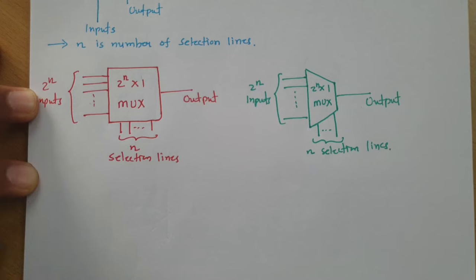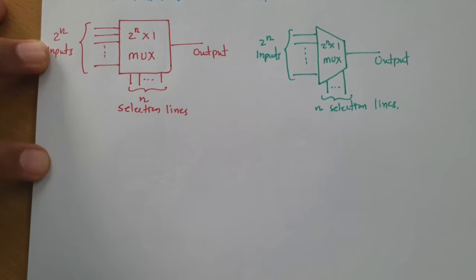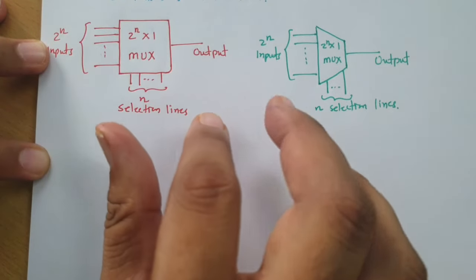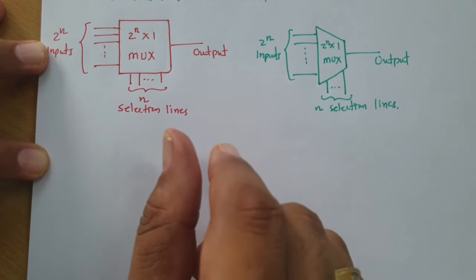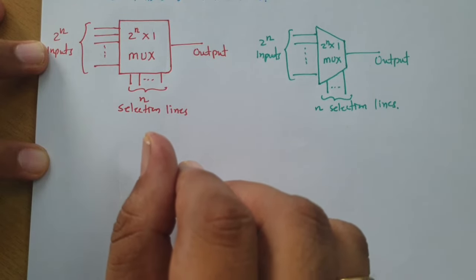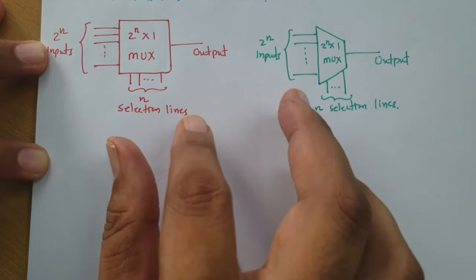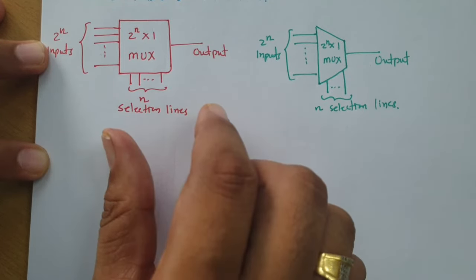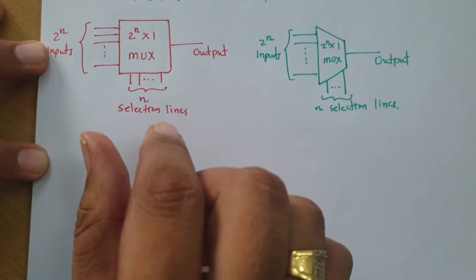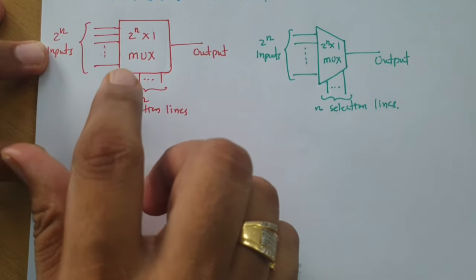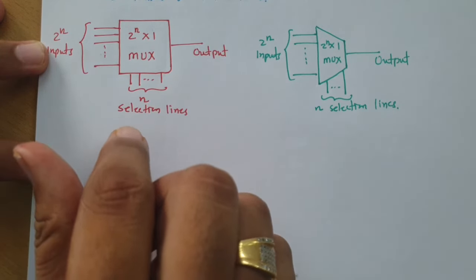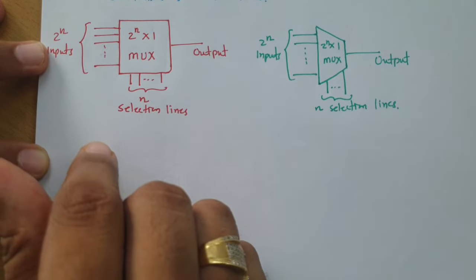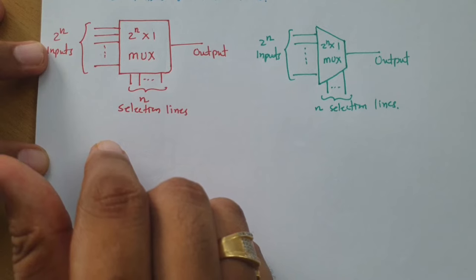There should be a question like why this multiplexer is very essential. When we talk about combinational circuits, we can form any combinational circuit using a multiplexer — we can form an encoder, decoder, half adder, full adder, and even a parallel adder. So almost all combinational circuits can be formed using a multiplexer.